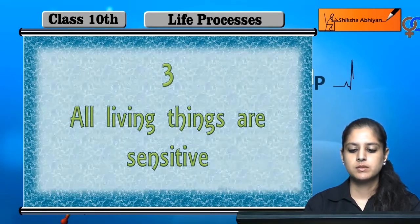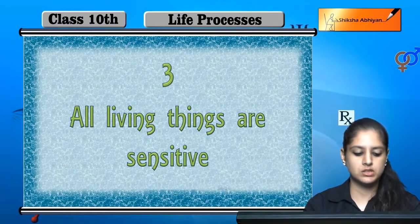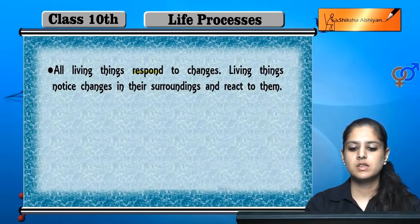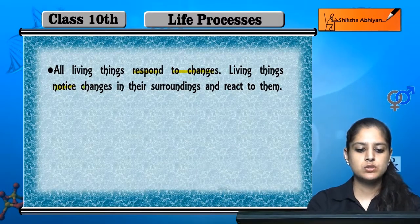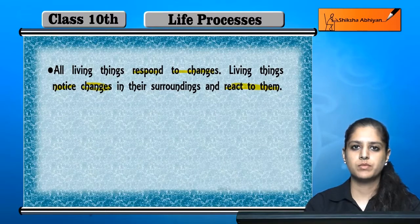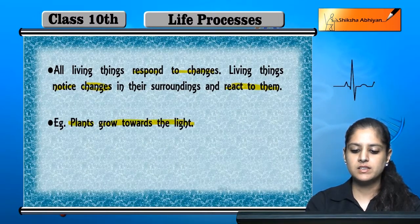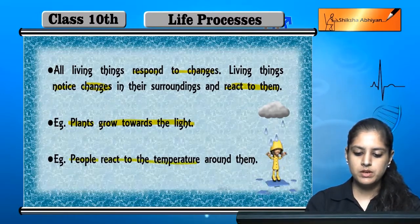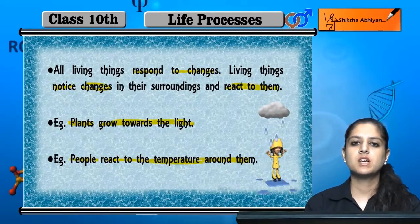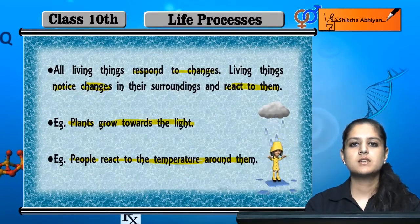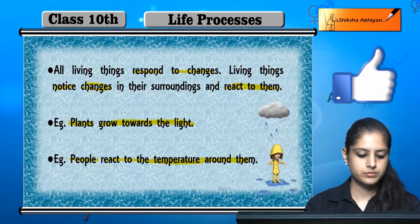The third life process is that all living things are sensitive. Living things show sensitivity to their surrounding environment. All living things respond to changes in the environment — they notice changes in their surroundings and react to them. For example, if we put something warm in our hands, we respond to it. Plants like the touch-me-not plant, if we touch them, they show sensitivity.